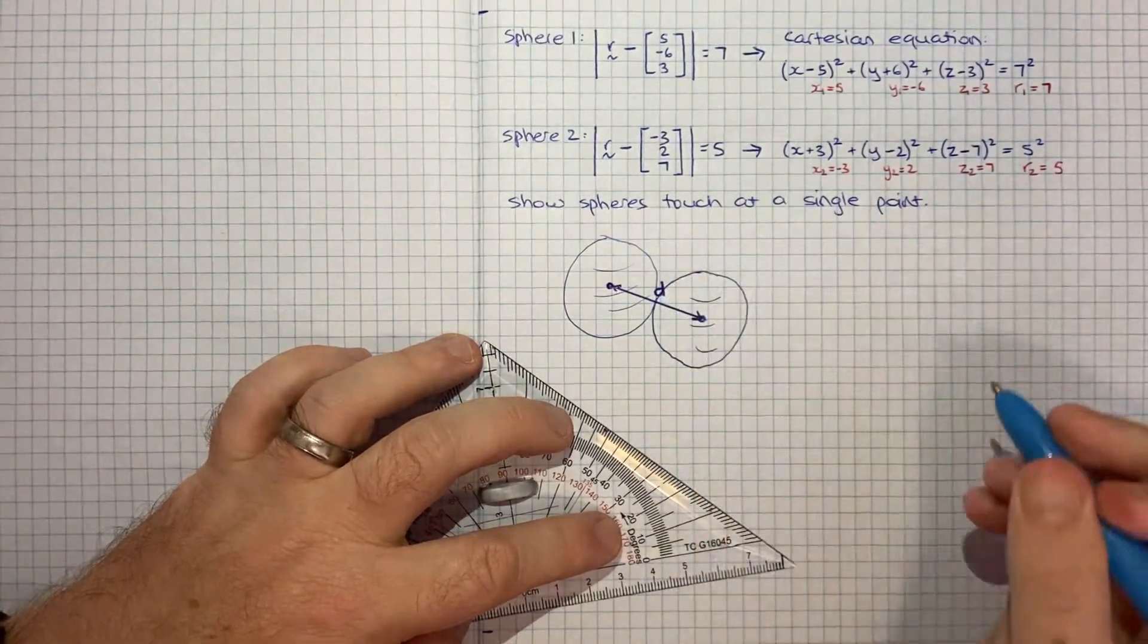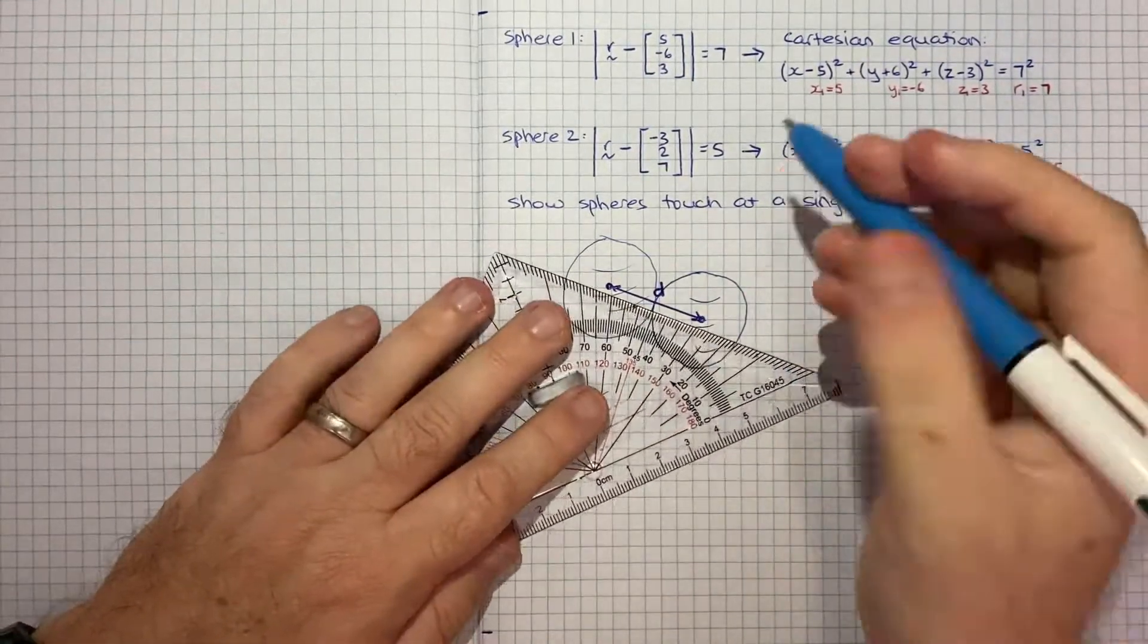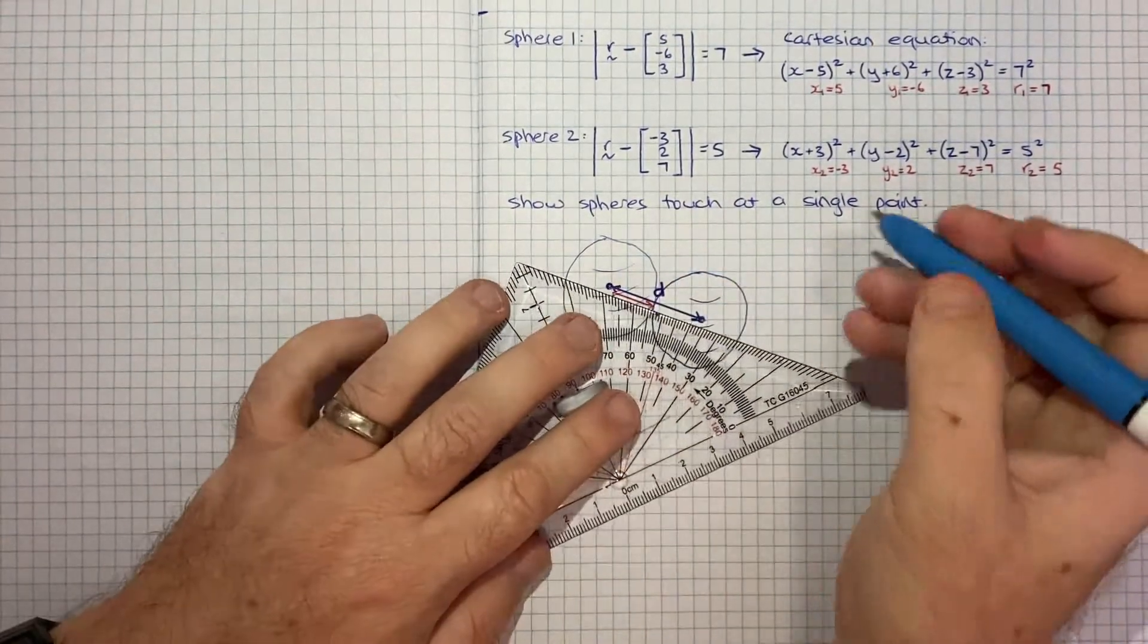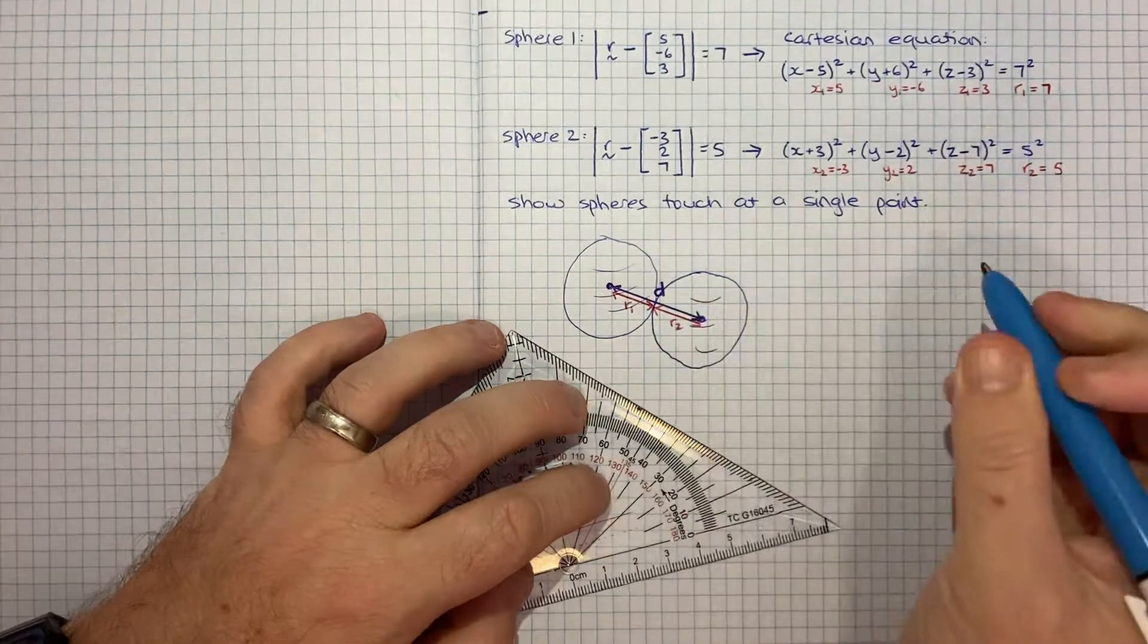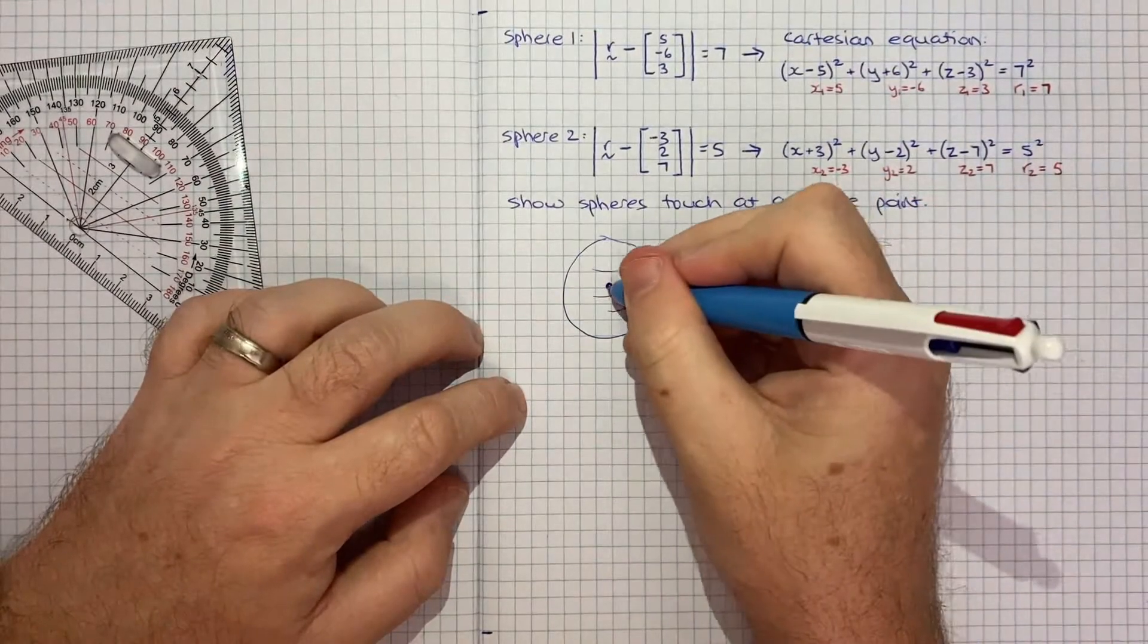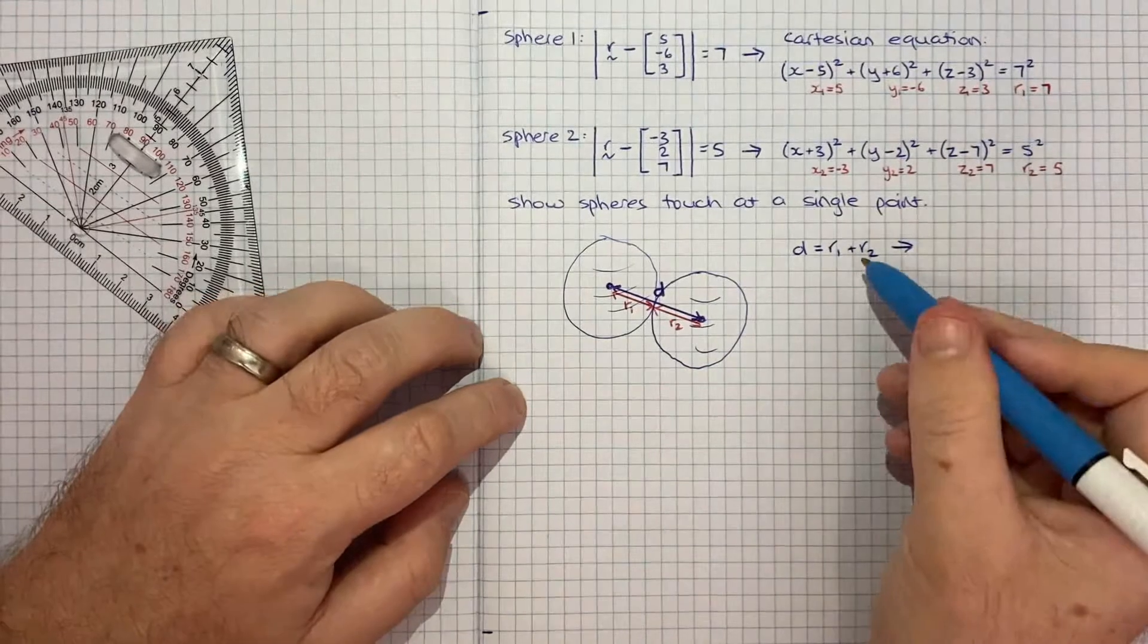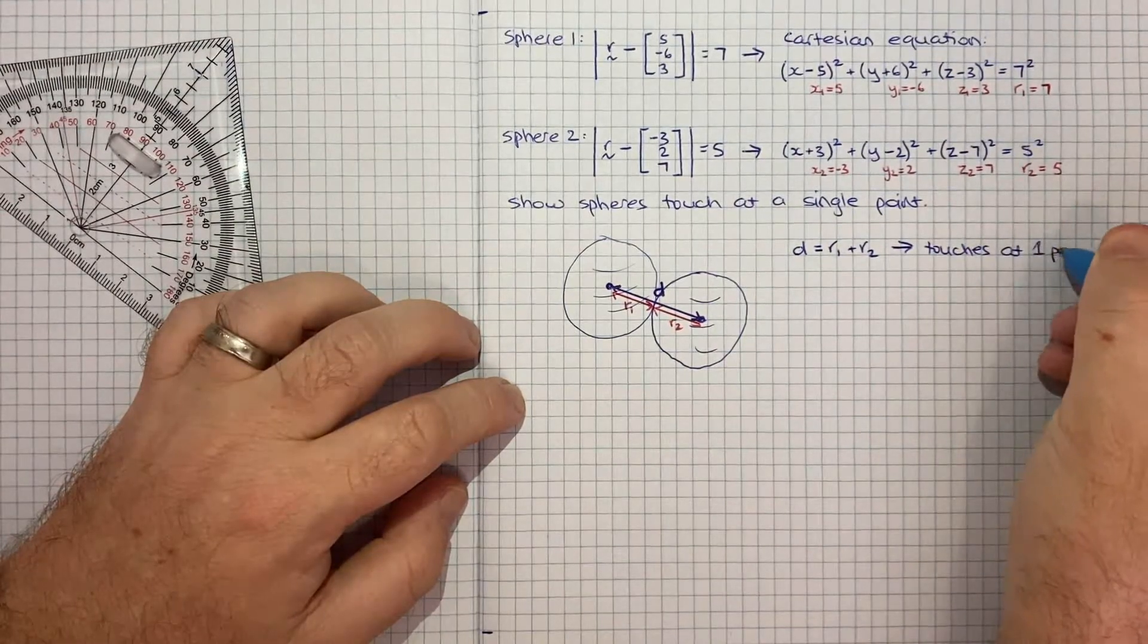In terms of the individual spheres, for sphere 1, the distance from the center to this point is the radius r₁. For the second sphere, that distance would be r₂. From this simple diagram, what we can see is that if the total distance between the two center points d equals exactly the sum of the radiuses r₁ + r₂, then that indicates that it touches at one point, which is what we're after.